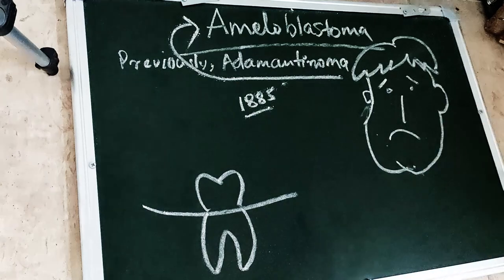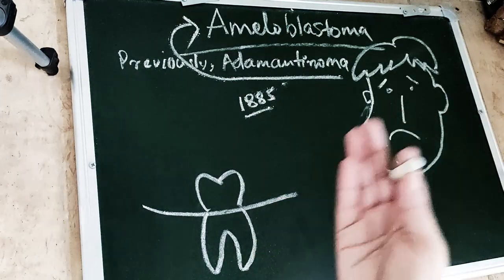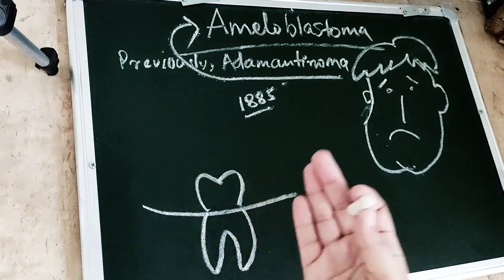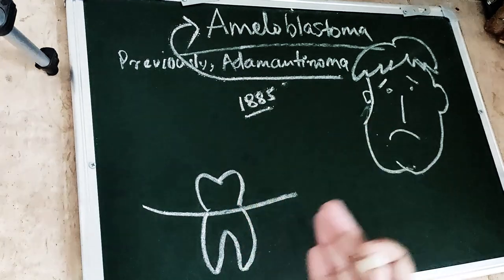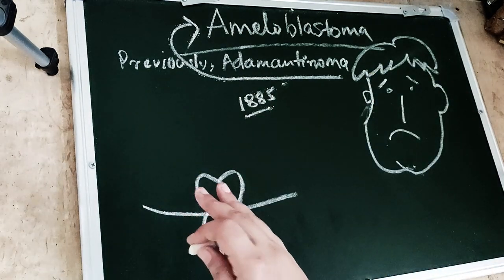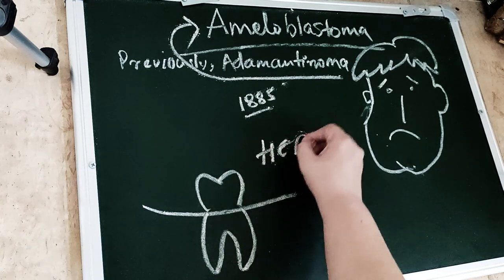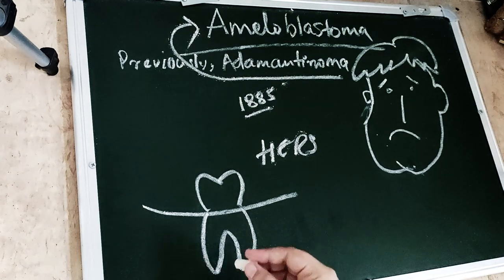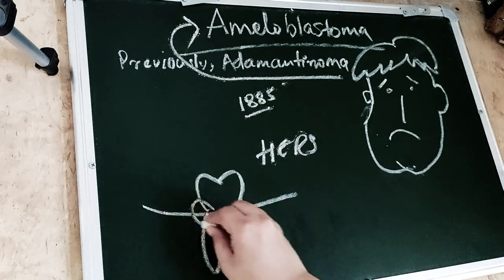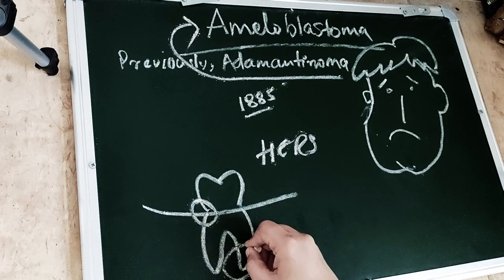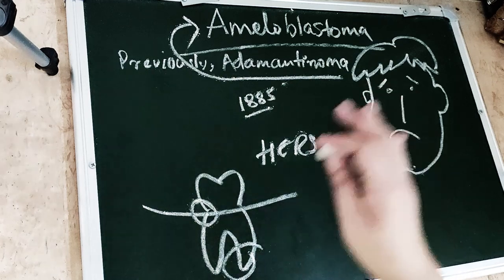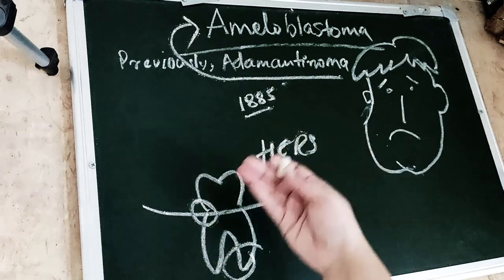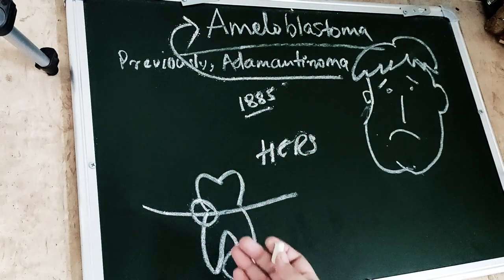The ameloblasts originate from the dental organ. The tumour cells of ameloblastoma are arising from cell rests of the dental organ — either the remnant of the dental lamina or the remnant of Hertwig's epithelial root sheath. This is how ameloblastic cells proliferate in large numbers, giving rise to the neoplasm which is ameloblastoma.